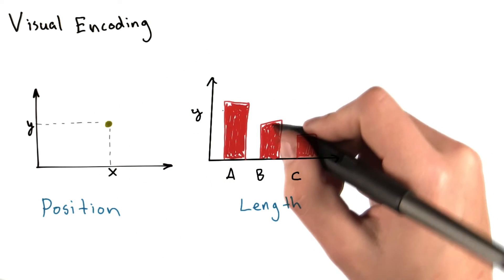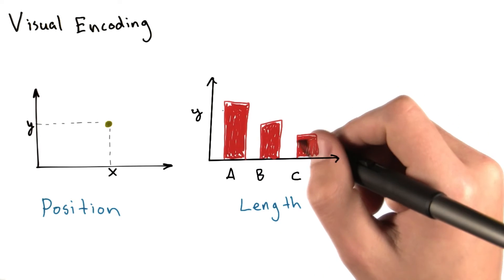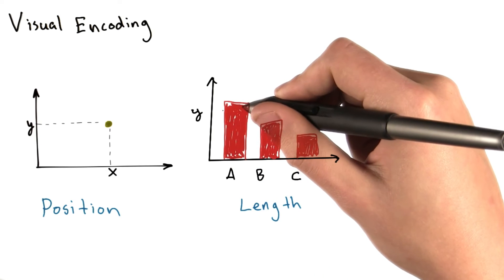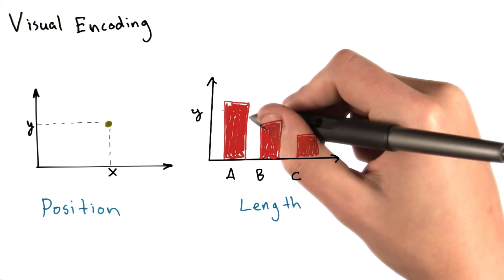Another commonly used visual cue is length, which is often encountered in the form of bar charts. The length of a bar indicates the intensity or value of your data point. For example, the longer the bar, the greater the absolute value.